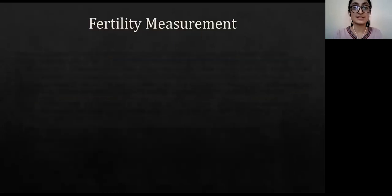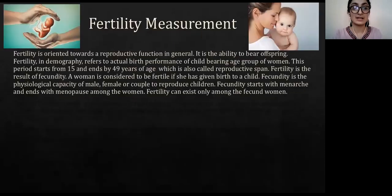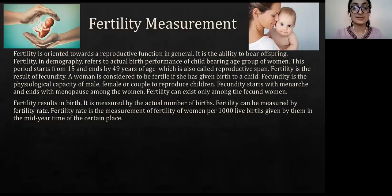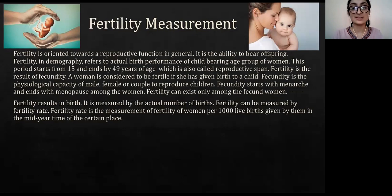Today I want to tell something about fertility measurement. Fertility is oriented towards a reproductive function in general. It is the ability to bear offspring. Fertility in demographics refers to actual birth performance of the childbearing age group of women. This period starts from 15 and ends by 49 years of age, which is also called the reproductive span. Fertility is the result of fecundity. A woman is considered to be fertile if she has given birth to a child.